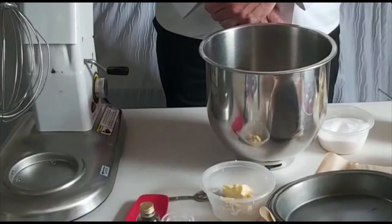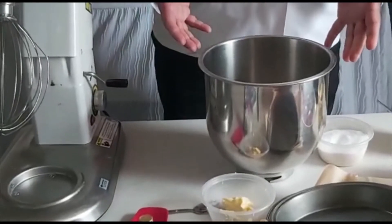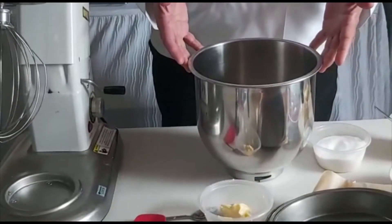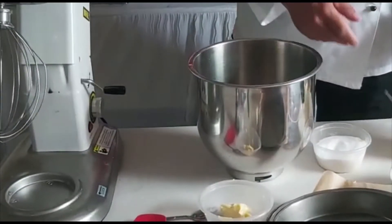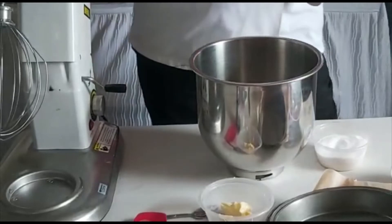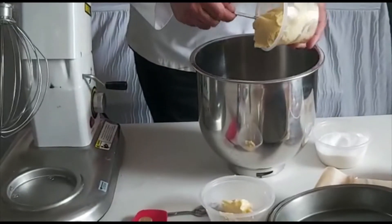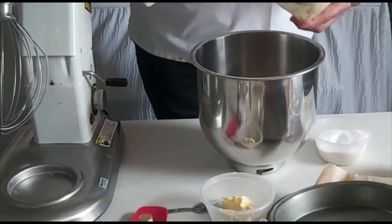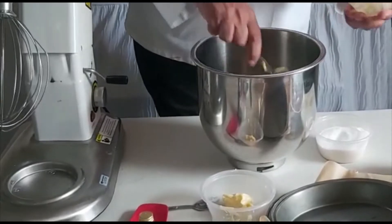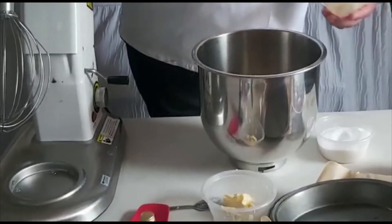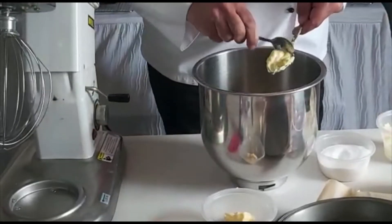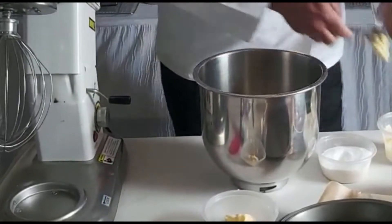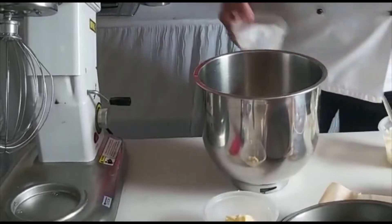Okay now we're going to make the sponge itself. I've got a mixing bowl. If you haven't got a mixer you can always use a hand whisk. So into here I'm going to put the 170 grams of butter. It's softened already. Place it in, and the 170 grams of caster sugar.